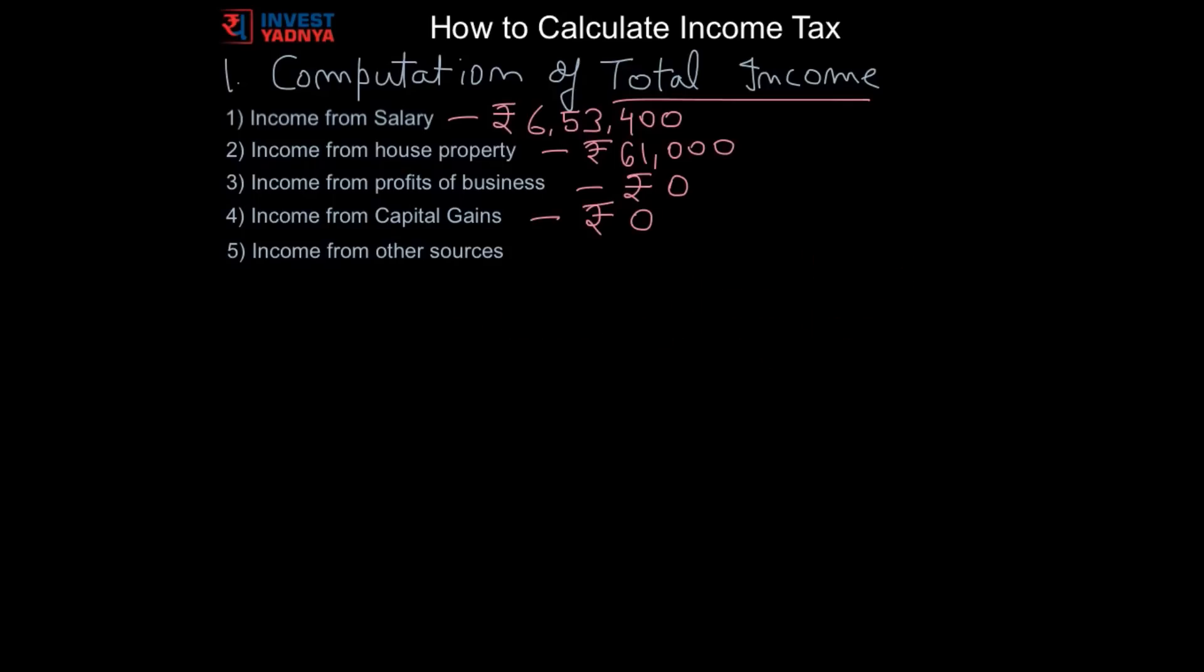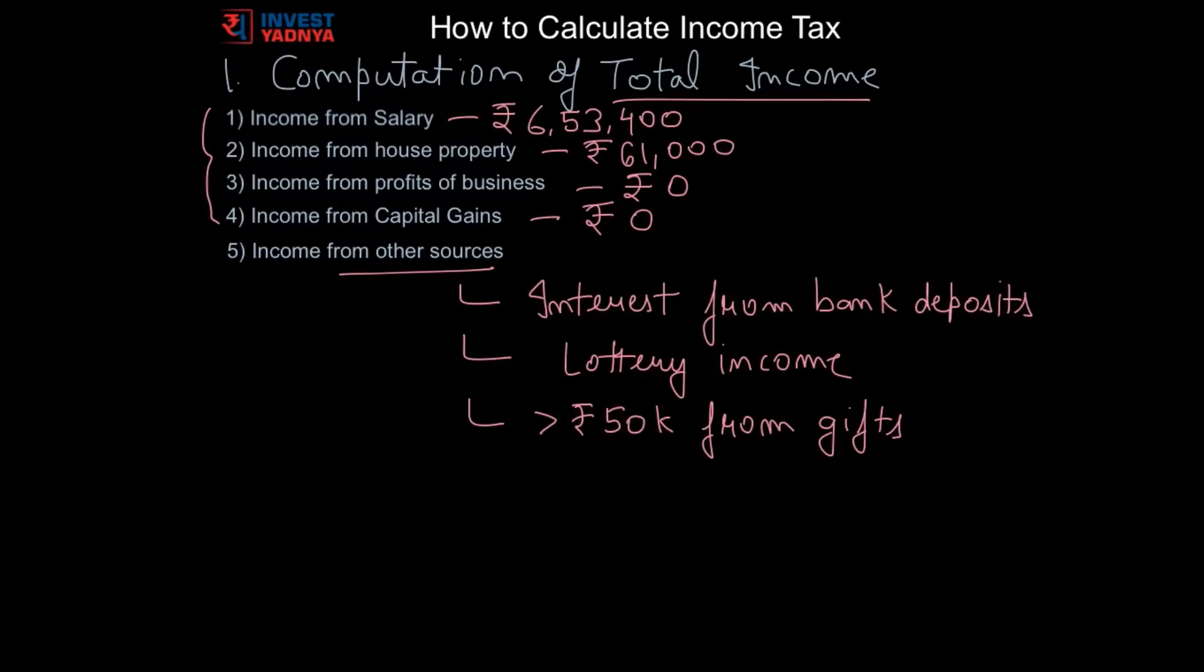Next is income from other sources. Any income that does not fall under any of the four heads of income above is taxed under the head income from other sources. An example is interest income from bank deposits, winning from lottery, any sum of money exceeding rupees 50,000 received from a person as a gift. We are assuming no income of Sunil under this head.